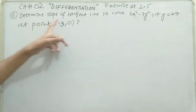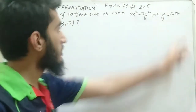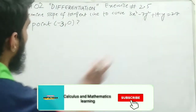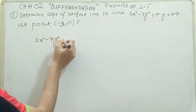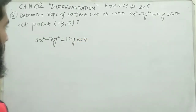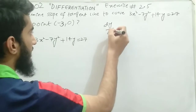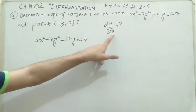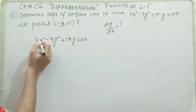Moving to question number five: determine the slope of the tangent line to the curve 3x² minus 7y² plus 14y equals 27, at the point (minus 3, 0). We take the given curve: 3x² minus 7y² plus 14y equals 27. The slope equals the derivative dy/dx, so we need to find dy/dx. Since we have x in the denominator, we differentiate both sides with respect to x.